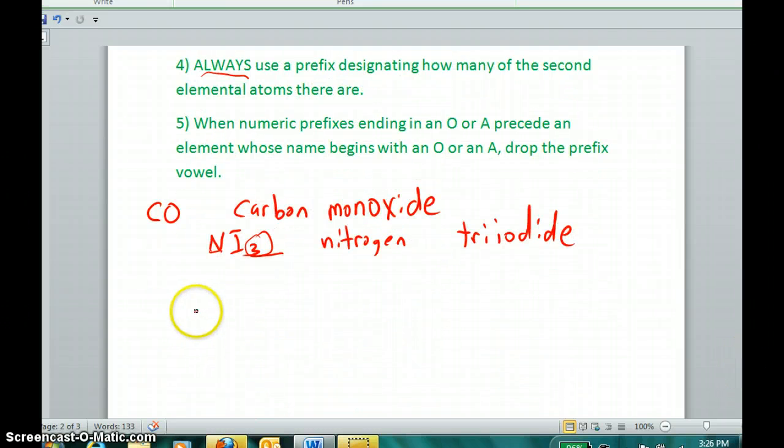A couple more examples, then. Let's say we saw this, P2O5. Name of the first element, phosphorus. If there's more than one, and there is in this case, use a prefix. Prefix for two is di. I name the second element as if it were a monatomic anion, oxide. And always use a prefix. Prefix for five, penta. And penta ends in A, and it precedes an O. So I drop the A from the prefix. And it's simply diphosphorus pentoxide.